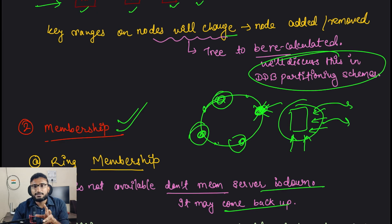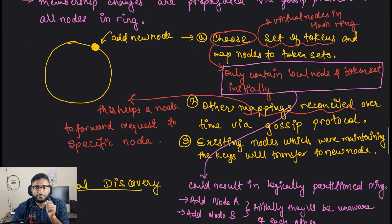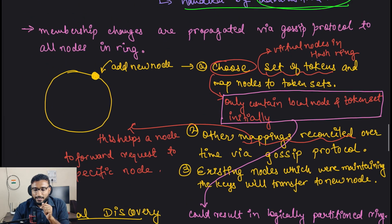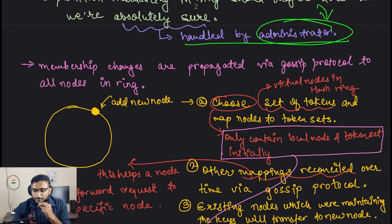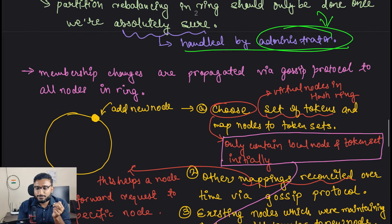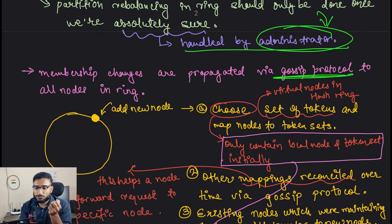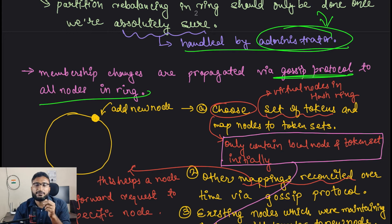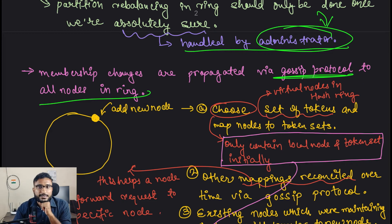Membership changes are propagated by gossip protocol to all other nodes in the ring. If some nodes have been removed from the ring or some nodes have been added to the ring, this is propagated to all nodes via gossip protocol so everyone knows what is going on.